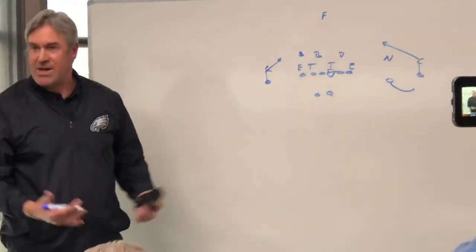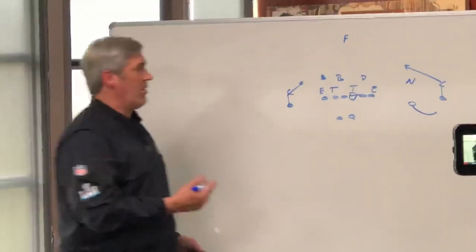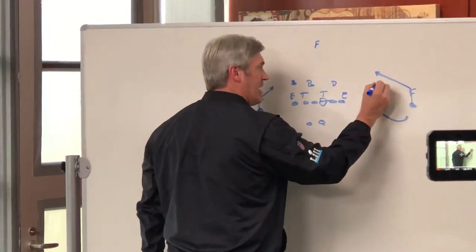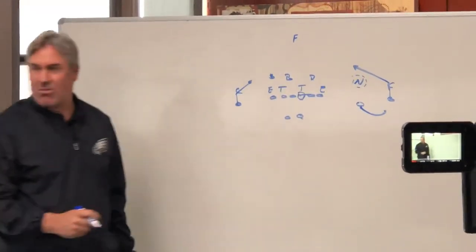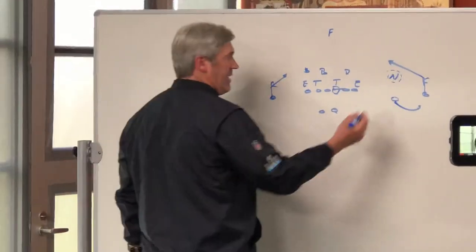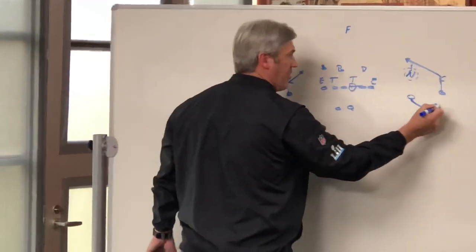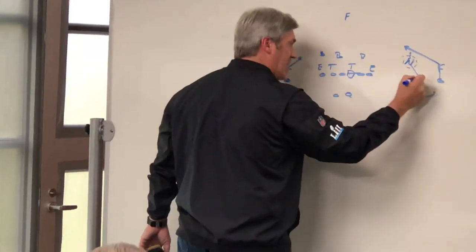Now we have the numbers we want to take advantage of the throw. And this is where the typical bubble slant. Now we're going to feel that defender right there from a quarterback's perspective. If he settles and they play zone, we'll throw it. If he attacks right here, then we're going to throw the slant in behind.